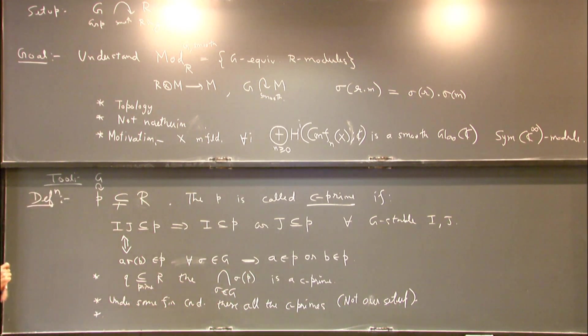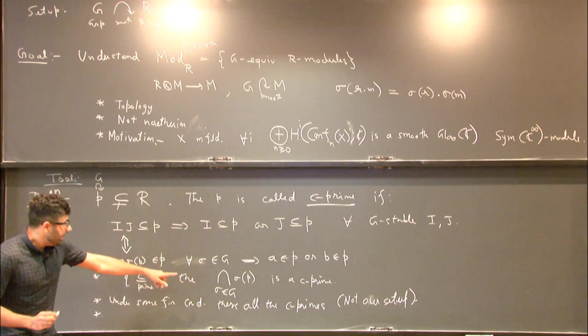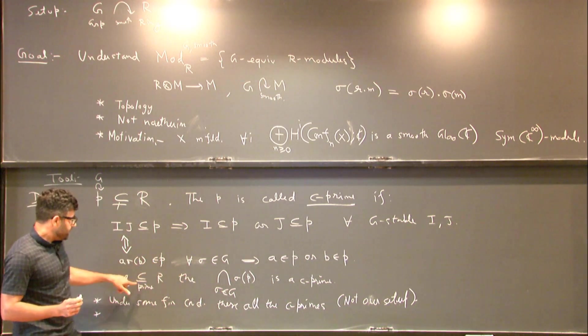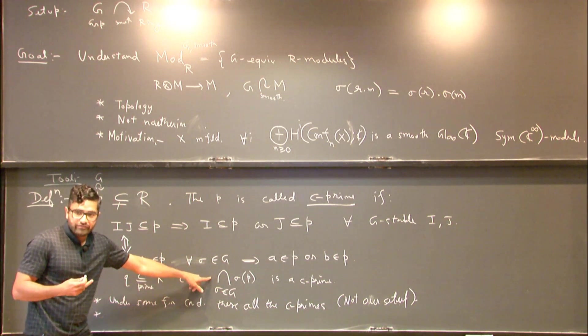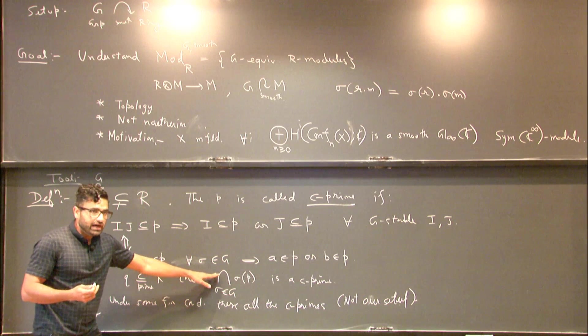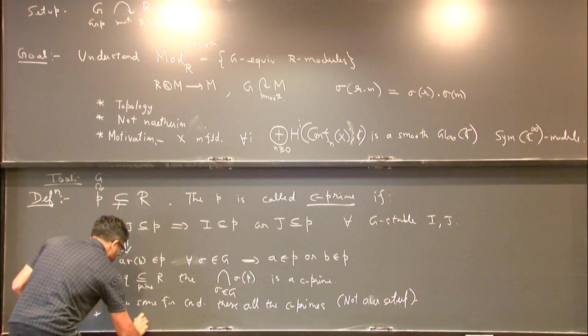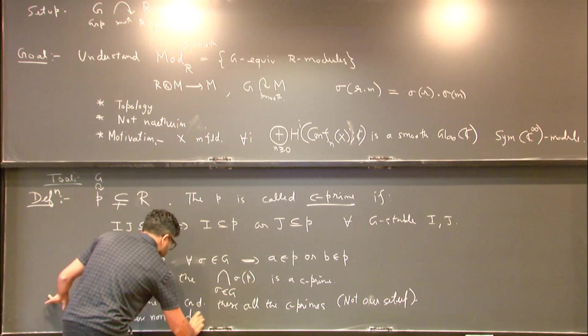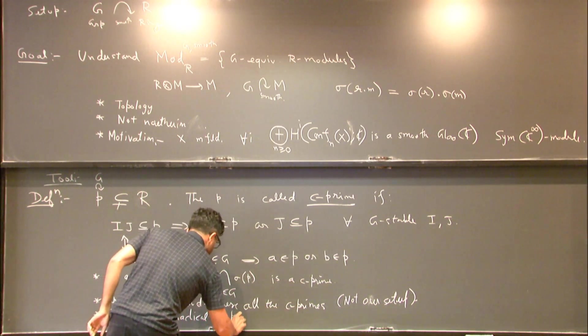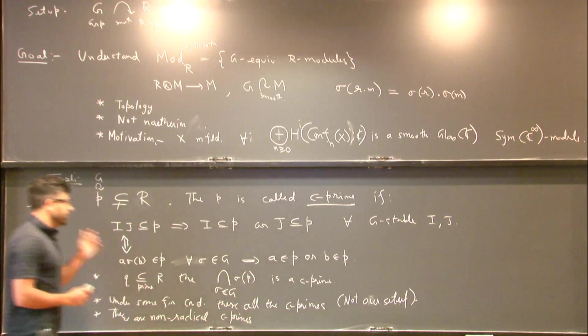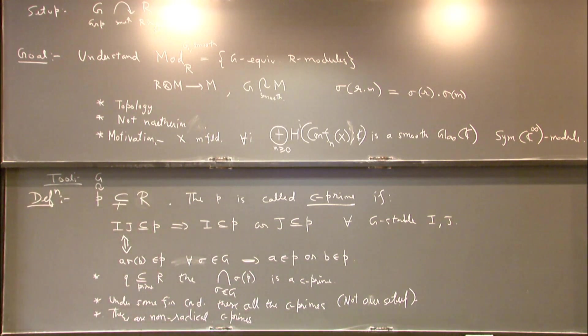One more thing to notice is that any such C prime that is obtained by taking the orbit of intersection of the orbit is going to be radical. But there are non-radical C primes. So I will provide some examples of that.